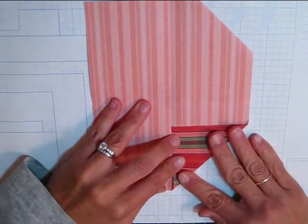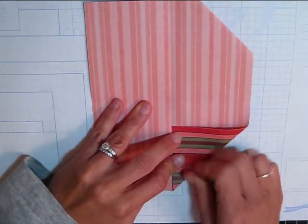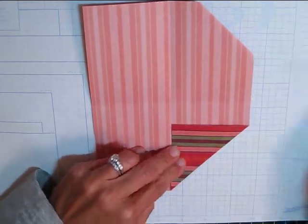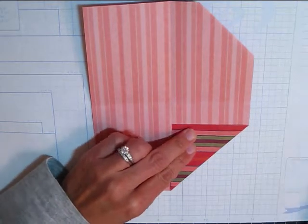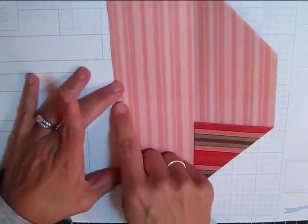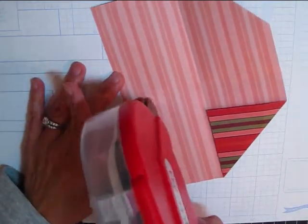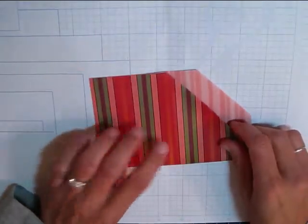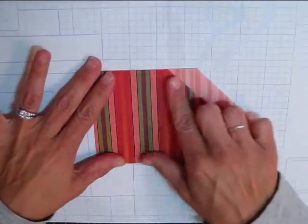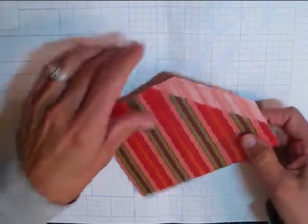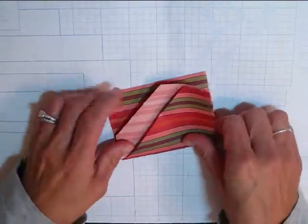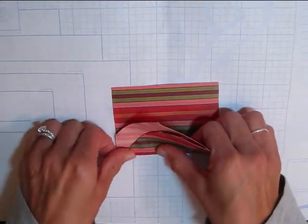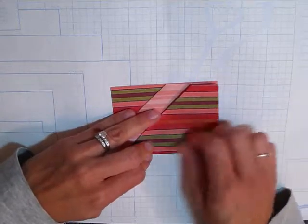Now you're going to glue it together. The first glue you're going to put here and here. Then you flip this up and then you're going to flip it this way. There we go.